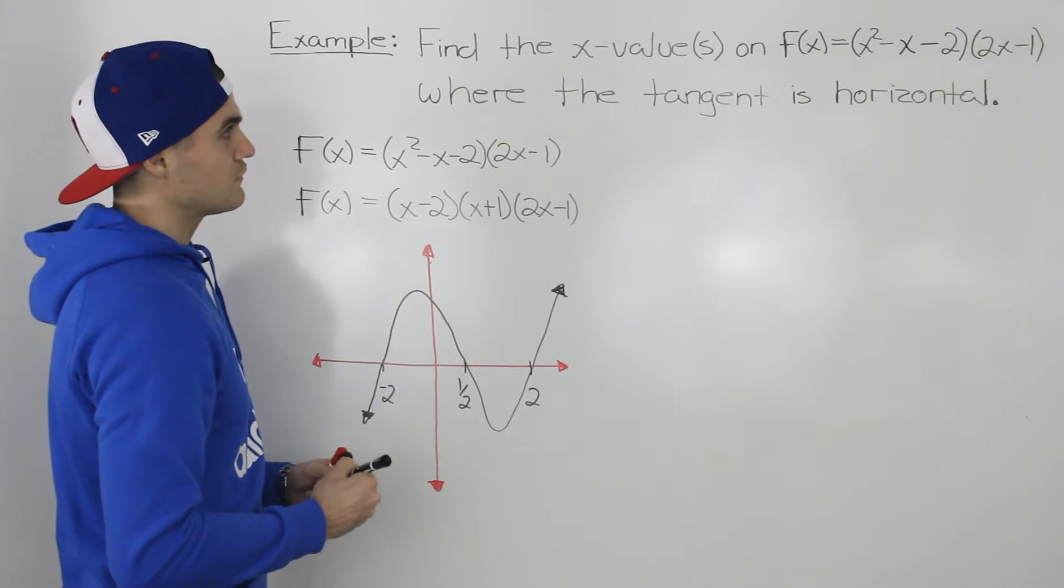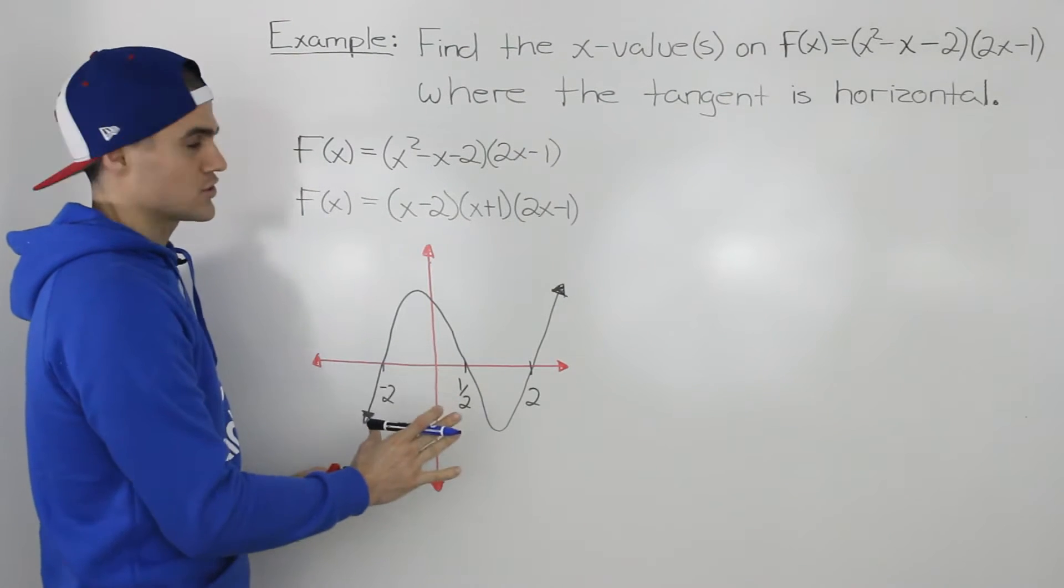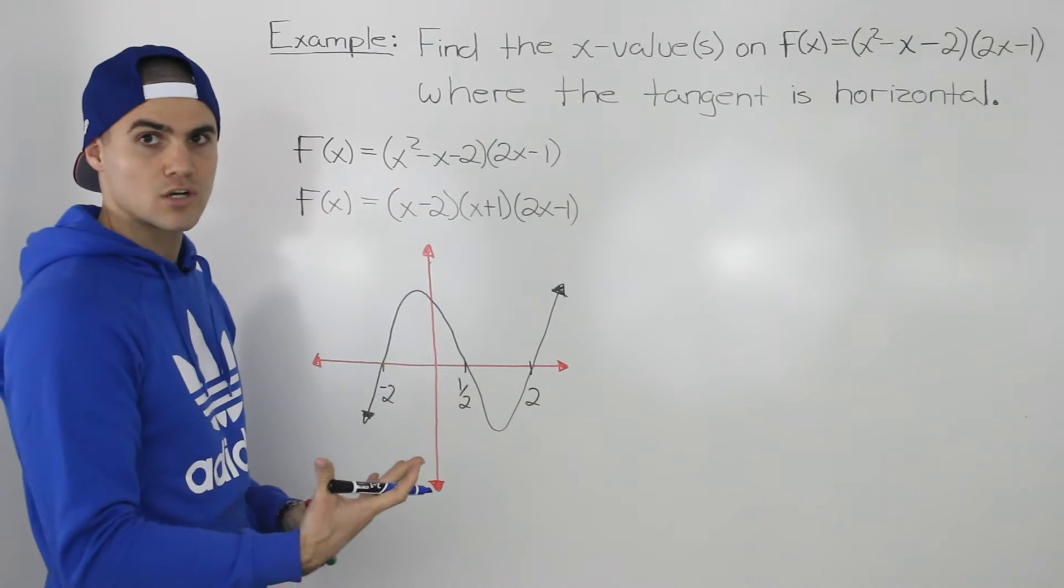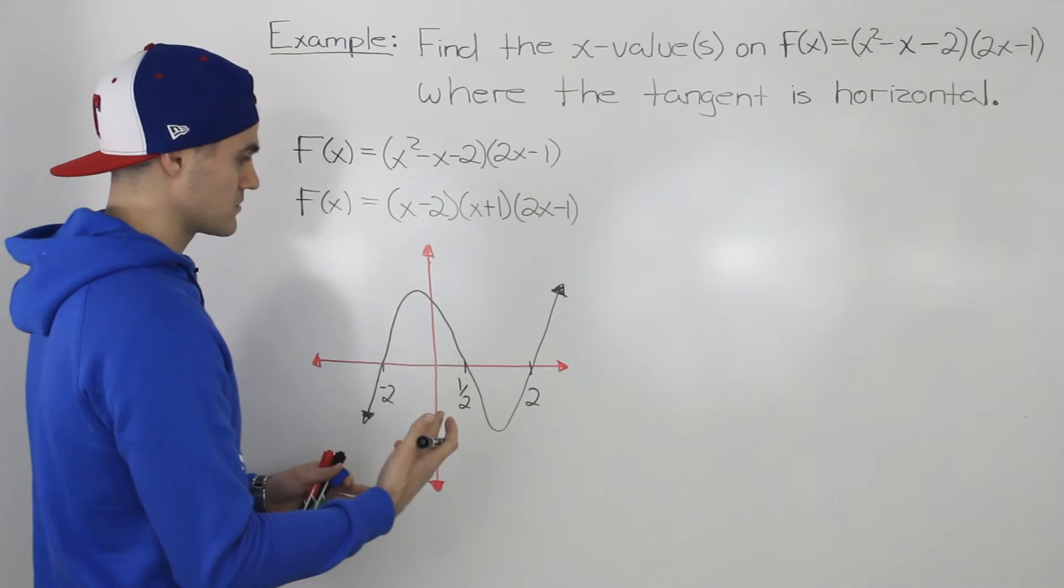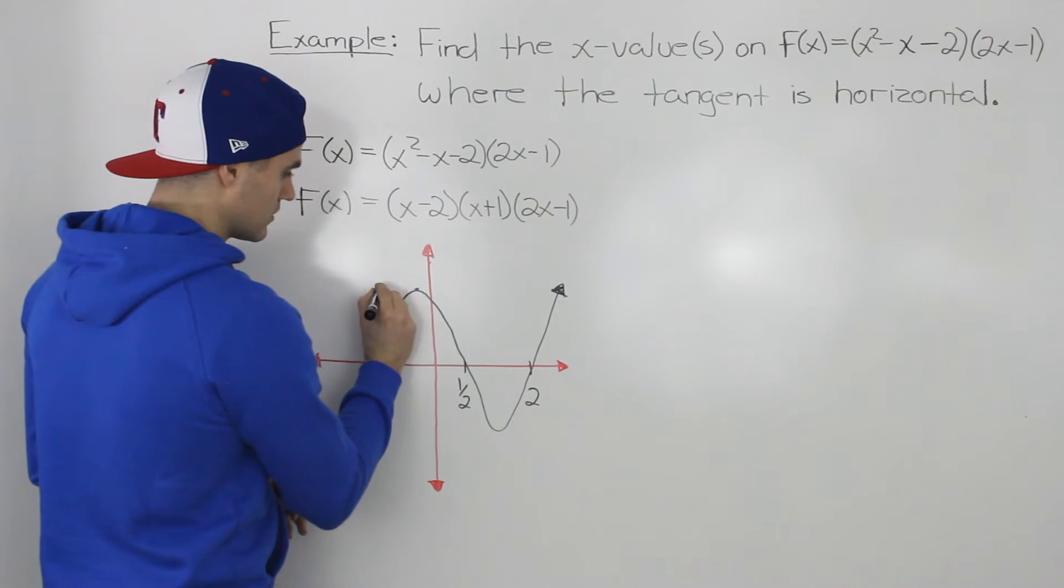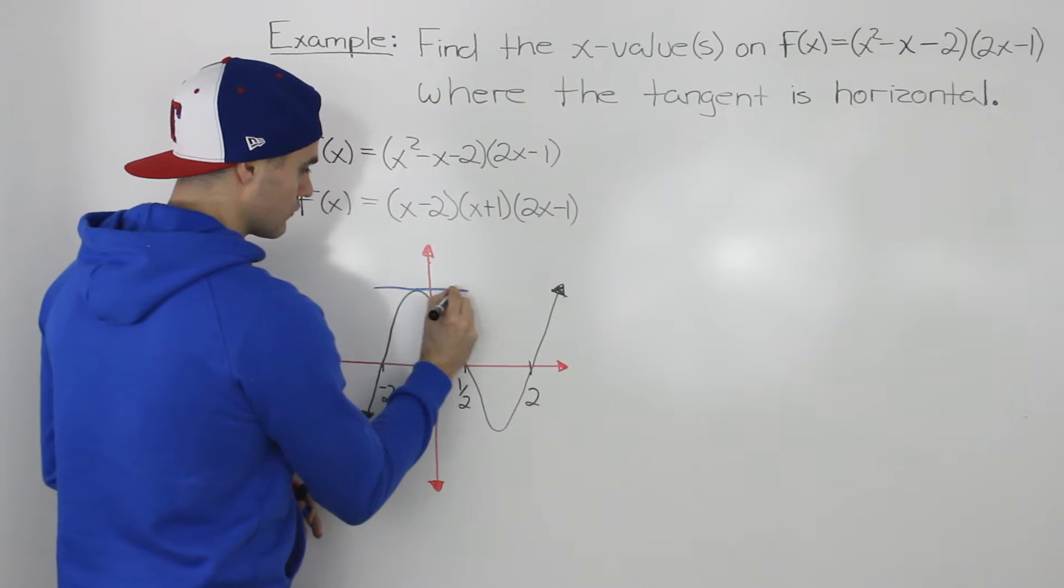So we have to find the x values on this function where the tangent is horizontal. Now a horizontal tangent always occurs at a maximum or minimum value. So at this maximum here, the tangent, if we draw one, it's going to be horizontal.